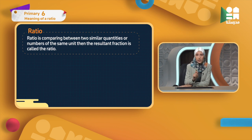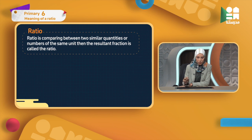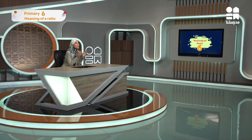This is a very important point. Ratio is comparing between two similar quantities or numbers of the same unit, and the result — a fraction — is called the ratio. The terms of ratio must have the same units: two centimeters, two liters, two kilograms — with the same unit.